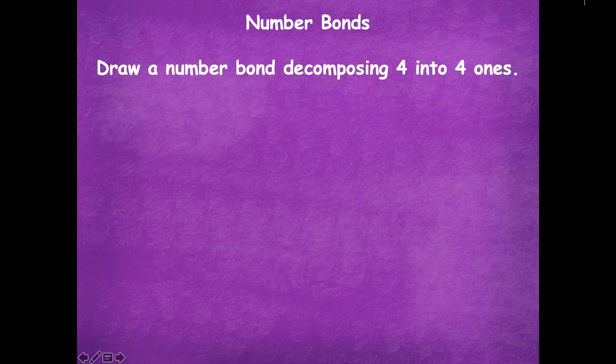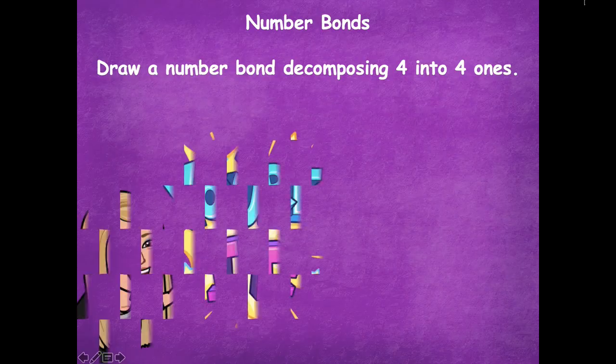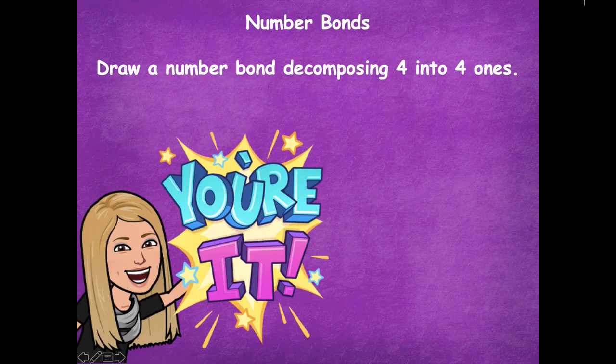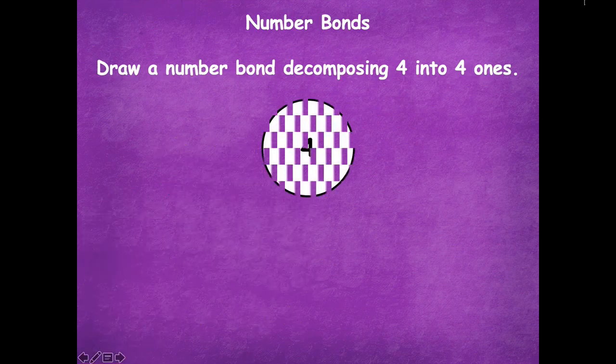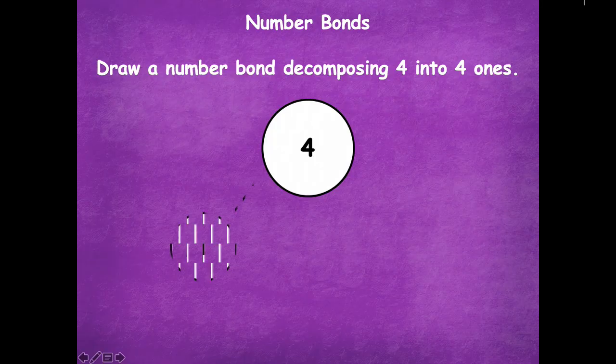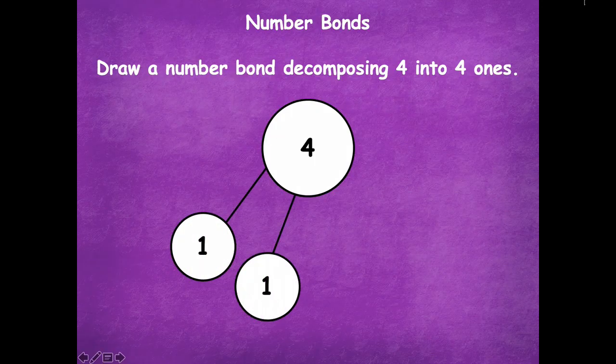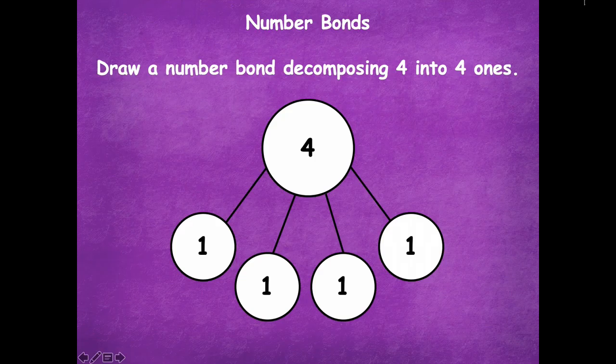Let's start our work with number bonds. You're going to draw a number bond decomposing four into four ones. I'll do this one with you. Here I have four, and I'm going to decompose it into four ones: one, two, three, four — because four ones make four. This is a simple example to start with.